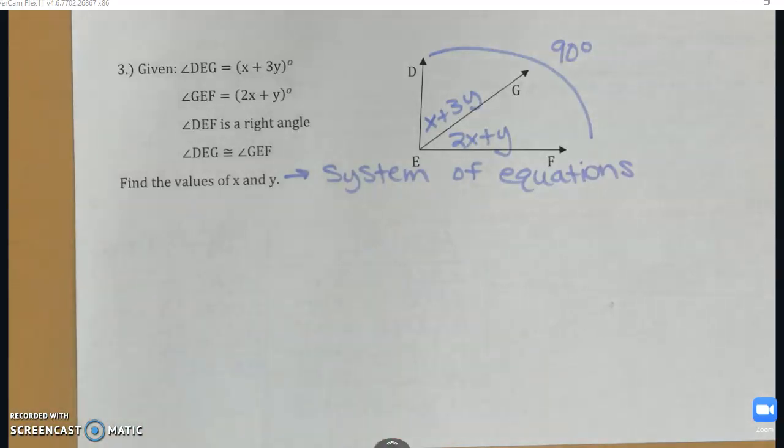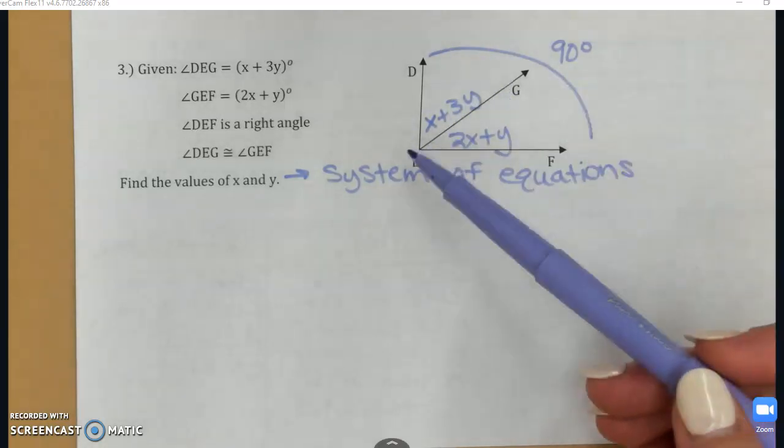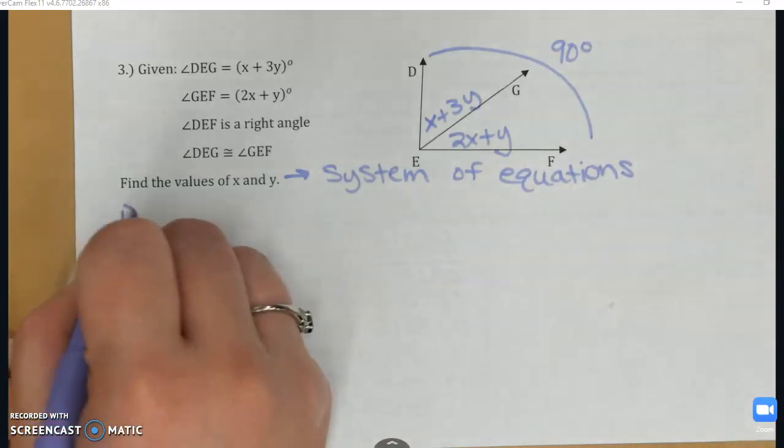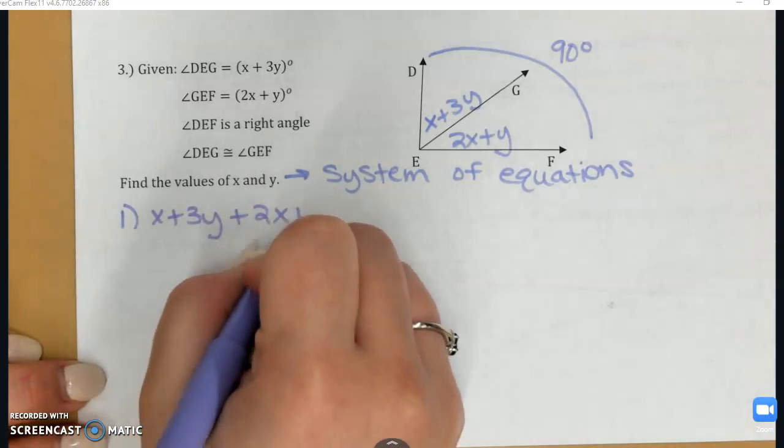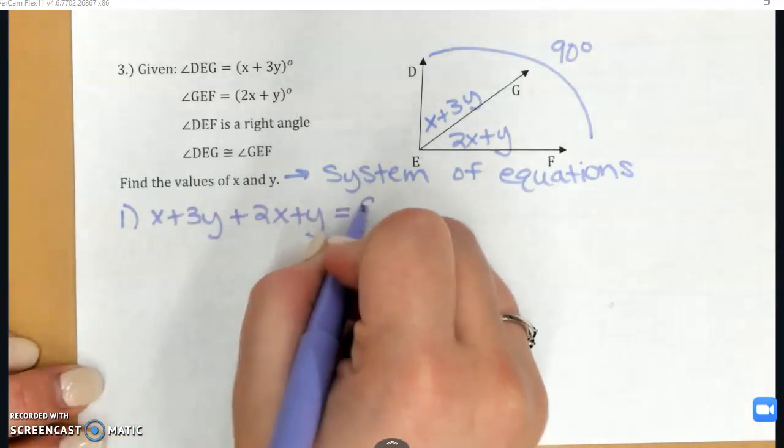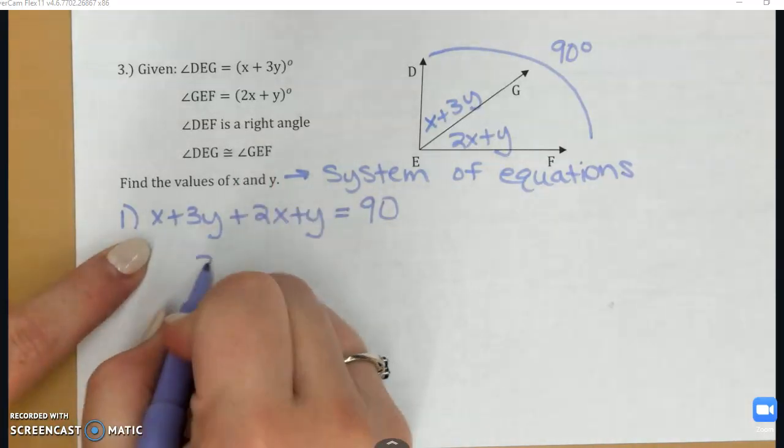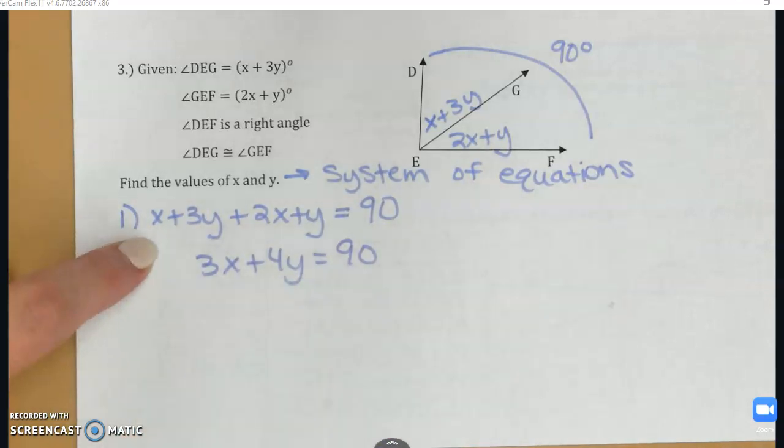So a system of equations means I have two variables, and I have to have two equations in order to solve them. Now for this one, I'm not given those equations. I have to write them myself using the information I was provided. So off the bat, one thing that I could write is that these two smaller angles are adding up to 90 because they're forming a right angle. So X plus 3Y plus 2X plus Y is equal to 90. I'm going to go ahead and consolidate my like terms, combine my X's and my Y's so that it's a little bit shorter. So there's one equation.